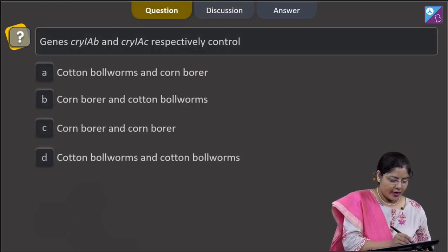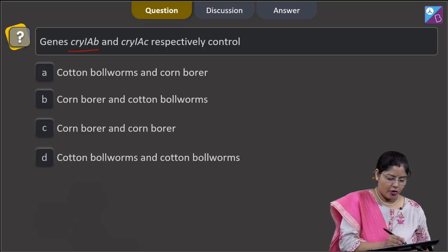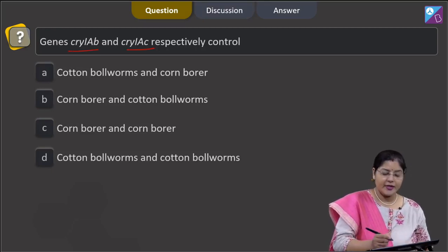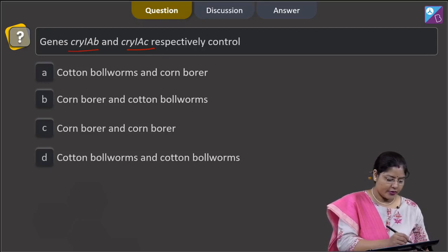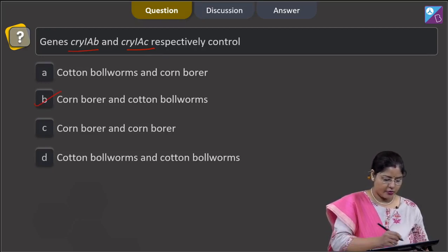So cry1Ac controls cotton bollworm. So the correct answer to this question is option number 2.